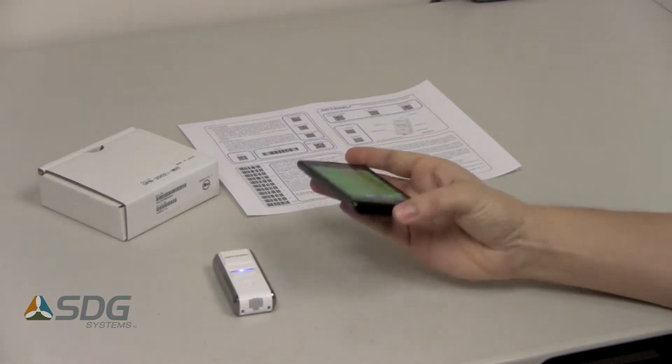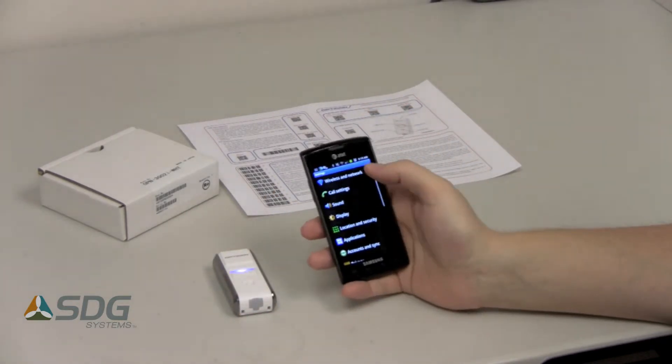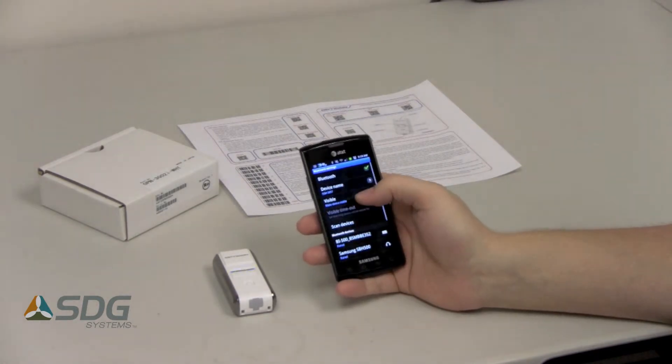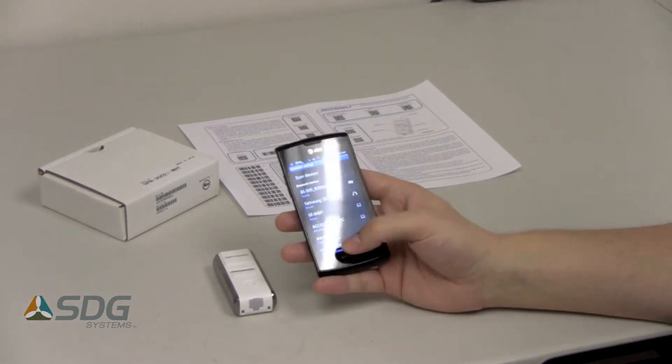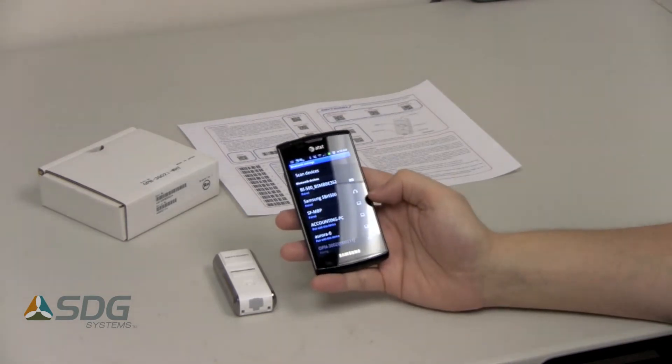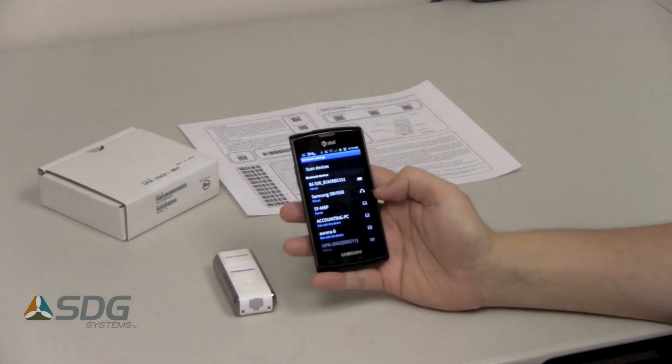Then on your phone, go to settings, wireless network, Bluetooth. Shows up as the OPN3002i. Pair with the device.